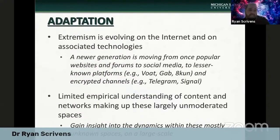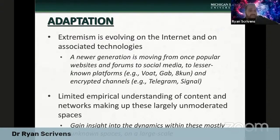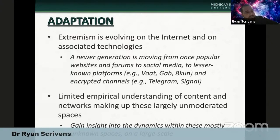Lastly, adaptation. Extremism is evolving on the internet and on associated technologies. We're continuing to see a newer generation moving from once popular websites and discussion forums to social media and lesser-known platforms such as Voat, 4chan, 8kun, and encrypted channels such as Telegram, Signal, and others. We currently have a very limited understanding of the content and networks making up these largely unmoderated spaces. It's going to be important that we gain insight into the dynamics in these lesser-known and mostly unknown spaces on a large scale.